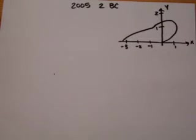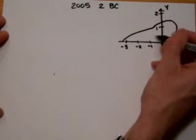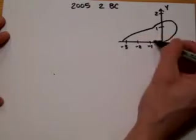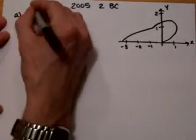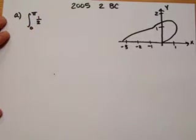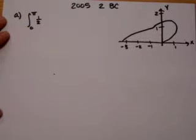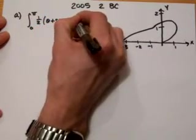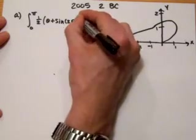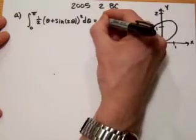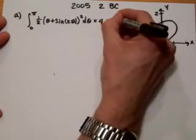This is Calculus with Allenson, problem number two from the 2005 BC test. Part A says find the area of this region from zero to pi and the x-axis. So for A, the integral from zero to pi of one half times r squared, where r is theta plus sine 2 theta, squared d theta. Plug that into your calculator — you should get 4.382.